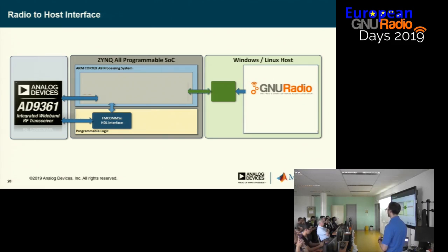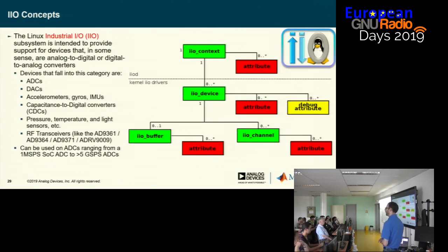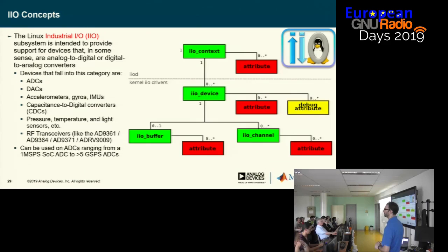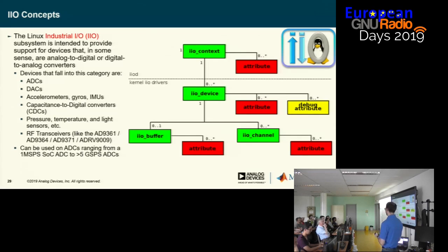ADI supports over 800 different devices through IIO. The subsystem we use in the kernel is called the Industrial Input-Output Framework (IIO), designed for ADCs, DACs, sensors, accelerometers, gyroscopes — low-level pieces that don't fit into the standard input framework used for mice and keyboards. IIO has a hierarchical structure: at the top is a context, which will be a board like Pluto or an eval kit with an FMC card. A context can be local or remote — Pluto is actually a remote context when you access it from your local machine.